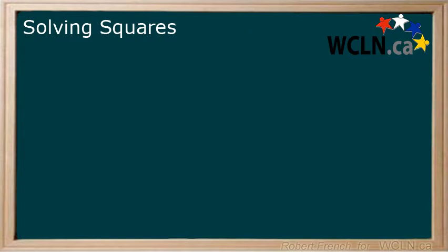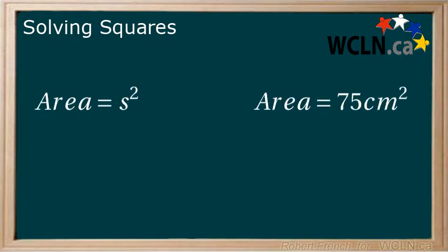We will start with the formula area equals s squared. We know the area of the square is 75 cm squared in this example. What is the length of the sides? The first step is to replace area with 75.